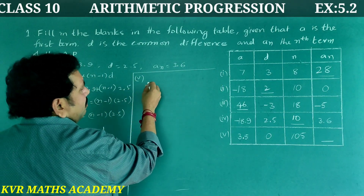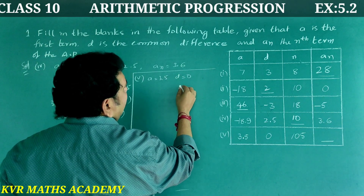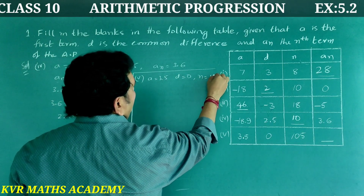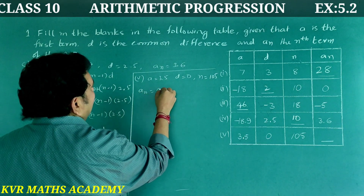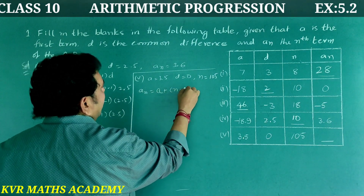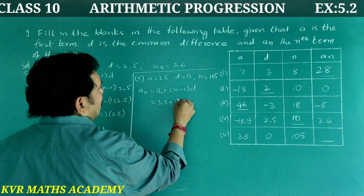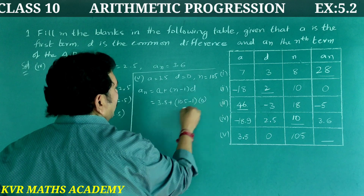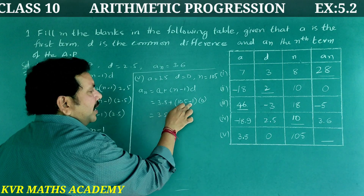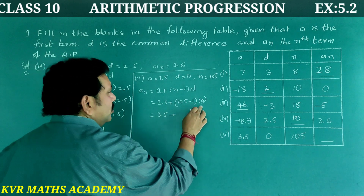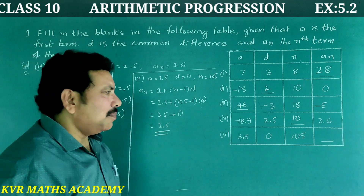Fifth one: A = 3.5, D = 0, N = 105, find A-N. Using the formula: A-N = 3.5 + (105 − 1) × 0 = 3.5 + 0 = 3.5. So A-N = 3.5.